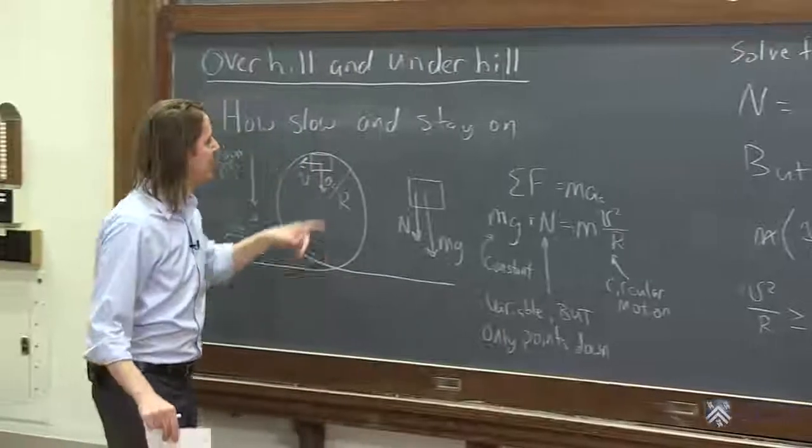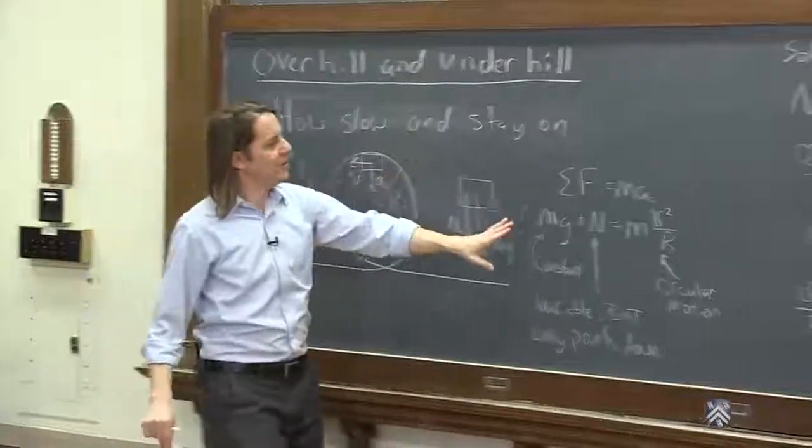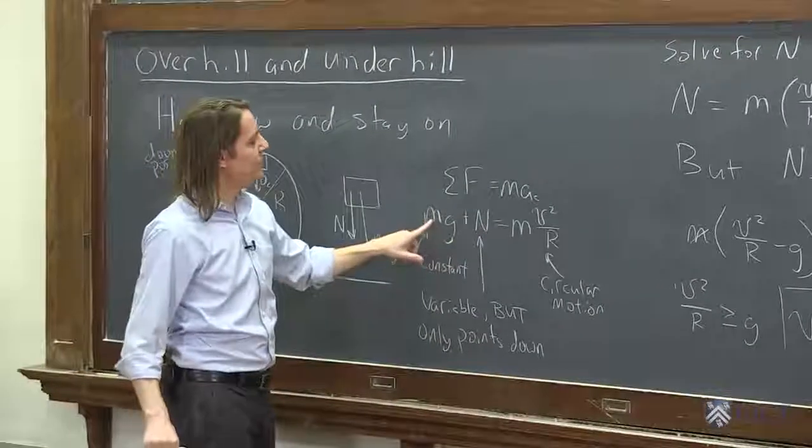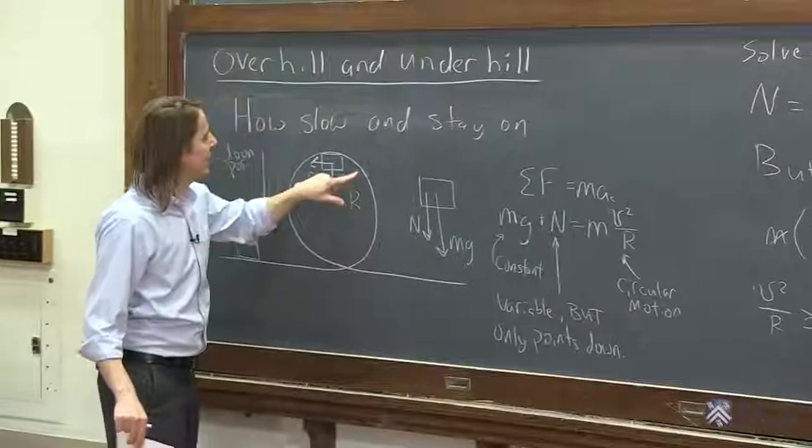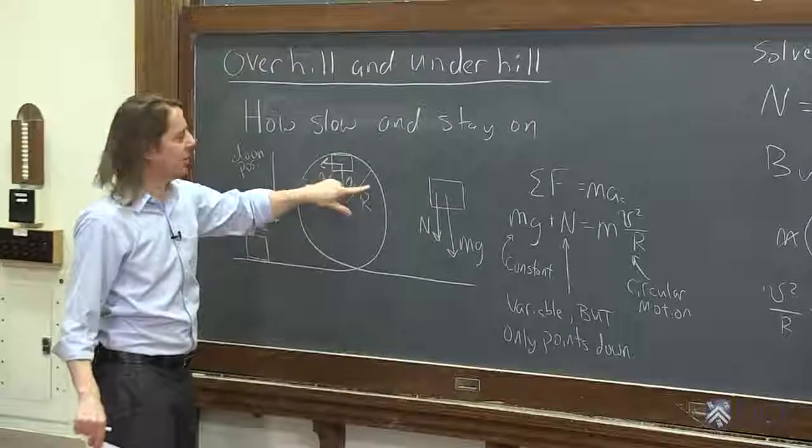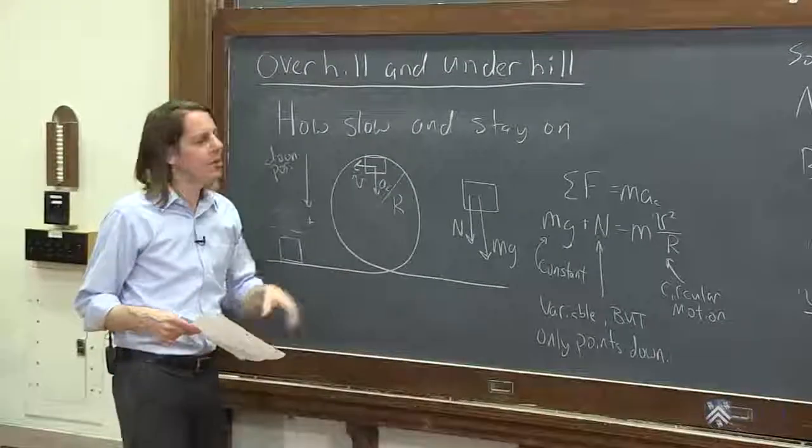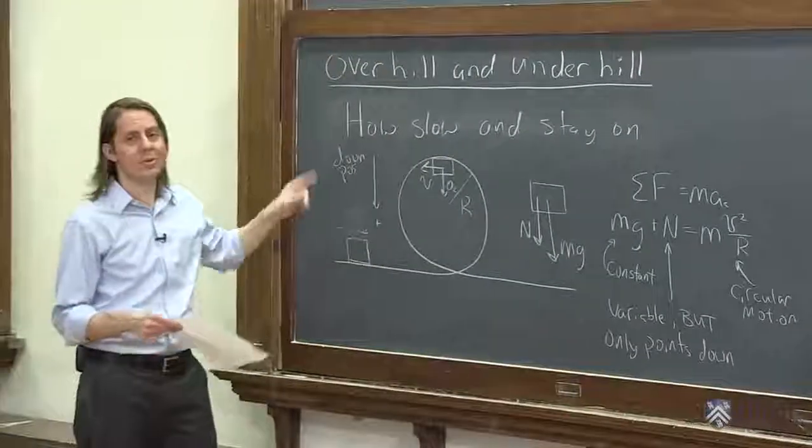If you go faster than that, you'll be fine. If you go slower, you basically have too much gravity pulling you down. The normal force is all the way to zero. So if you want to accelerate slower than that, you've got too much force. And that's why you fall. So that is underhill. Next, we'll do overhill.